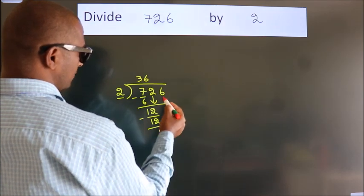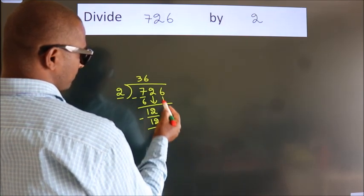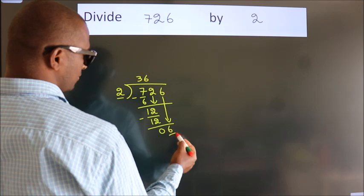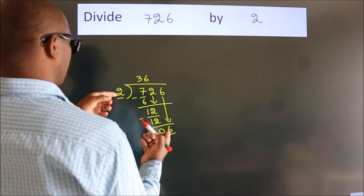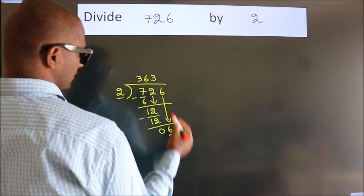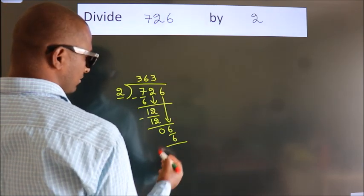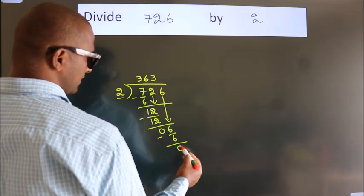After this, bring down the beside number. So, 6 down. So, 6. When do we get 6? In 2 table, 2, 3 is 6. Now, we subtract. We get 0.